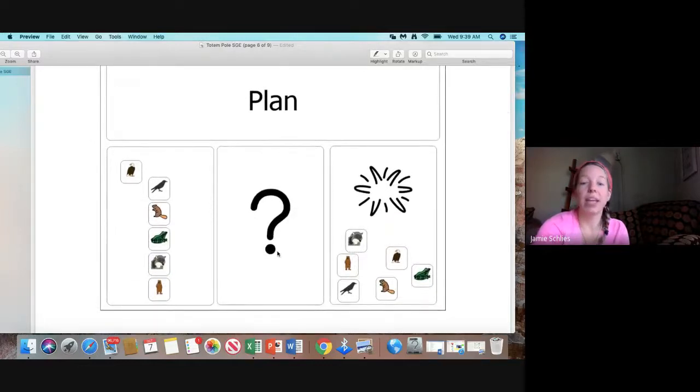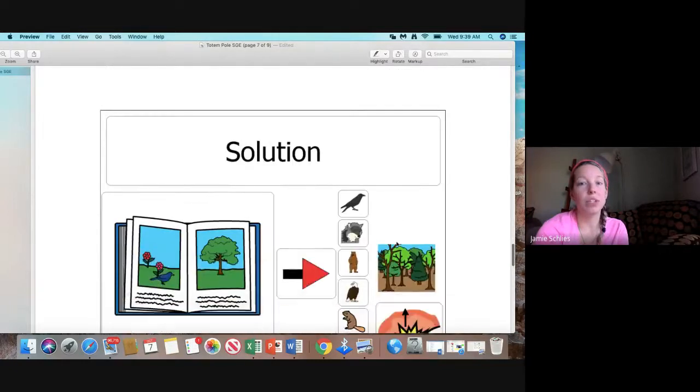So what was their plan? Their plan was each animal took a turn trying to be at the top to figure out, hmm, maybe this is the correct order. Maybe this is the correct order. Trying to figure out what would work. A lot of the times they ended up crumbling and falling to the ground. So their plan was to just keep trying different orders for the animals.